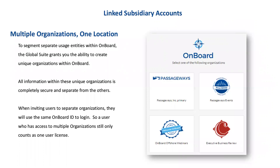The nice thing about that is that when a user has access to multiple organizations, it still only counts as one user license. So that same user can have access to your primary holding company organization, the bank board organization, and maybe some internal committee meetings in a completely separate organization — all with one user license — but with the guaranteed security of knowing that those are completely separate instances and information won't travel between the three organizations.